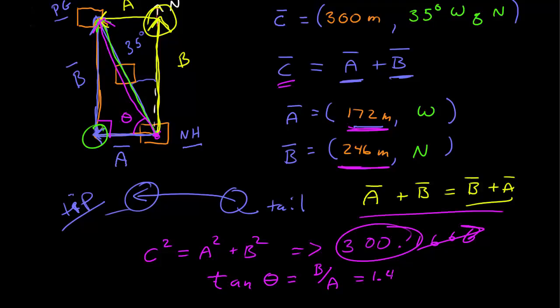B over A is 1.43023, that gives me an angle of 55. This angle is 55, that means this angle is 35, because the total has to add up to 90, because that is a right triangle.